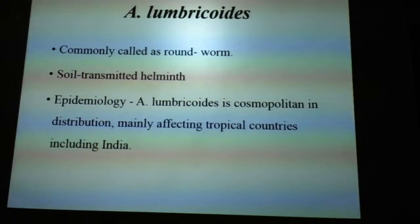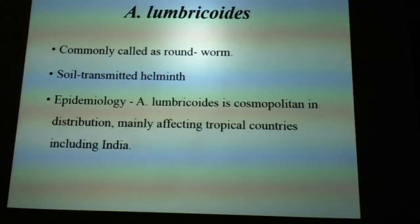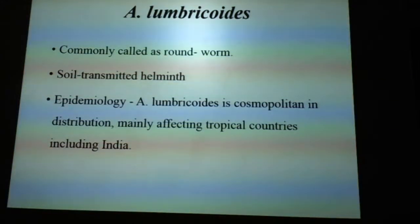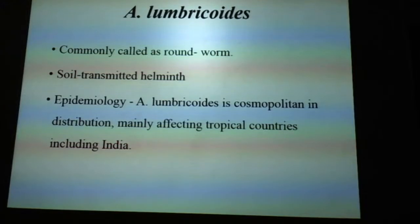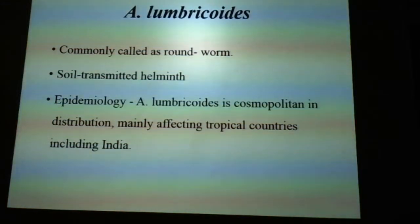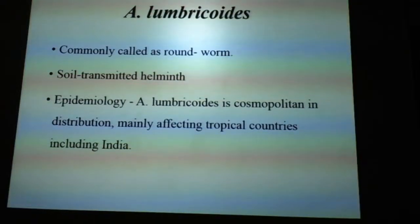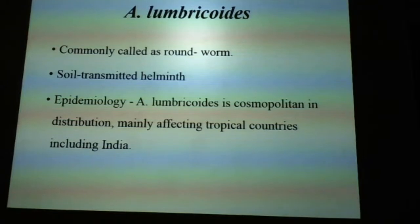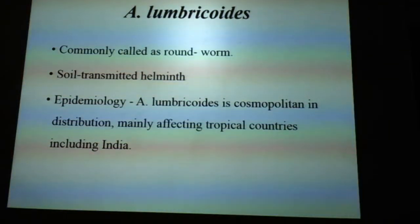Coming to Ascaris lumbricoides — it is also commonly called roundworm, again because of the morphology of the worm. It is a soil-transmitted helminth. Looking at the epidemiology, it is cosmopolitan in distribution, meaning we can see it everywhere — not restricted to temperate or tropical zones only. It is cosmopolitan, though it mainly affects tropical countries and is also seen in India.